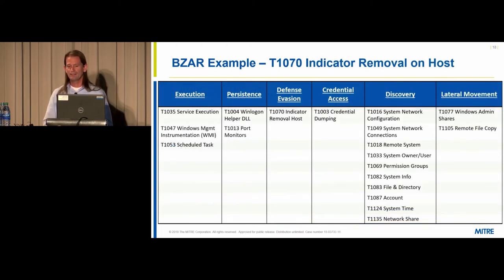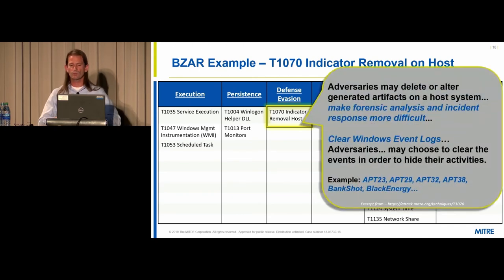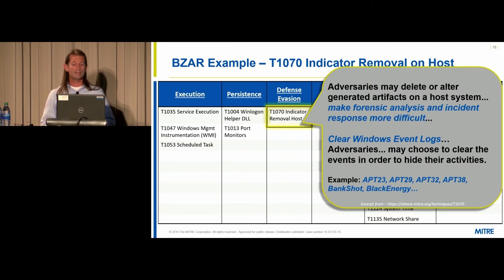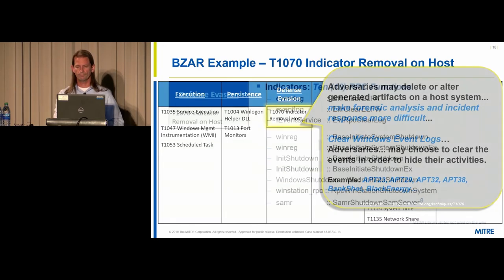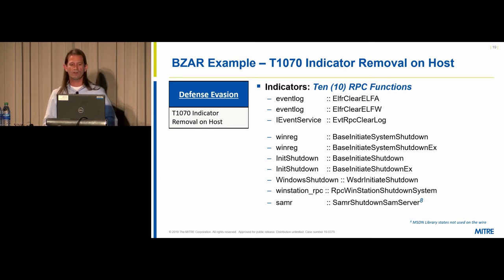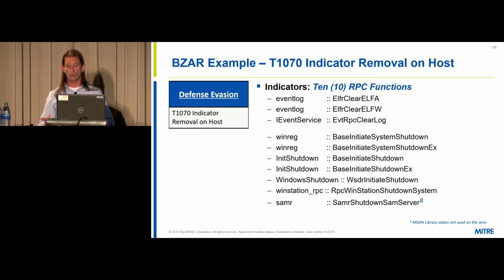Next, indicator removal on host. The ATT&CK description states that adversaries may delete or alter generated artifacts on a host system to make forensic analysis and incident response more difficult. The specific example cited is clearing the Windows event logs — adversaries may clear event logs to hide their activities. There are many different threat groups and software documented as using this technique. BZAR looks for 10 different RPC functions: the first three are specifically related to the event log, via two RPC interfaces — EventLog and IEventService — with functions to clear the log and clear the event log file.